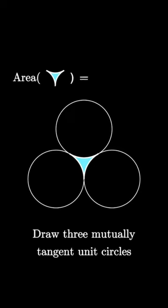Draw three mutually tangent unit circles like this. These three circles enclose an area as shown here. Can you determine the area of the enclosed shape?